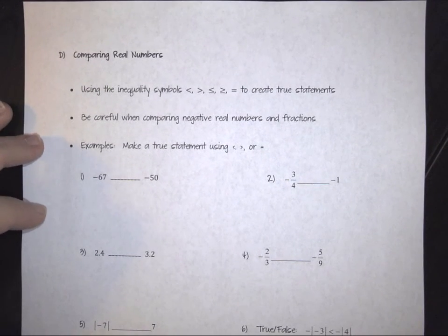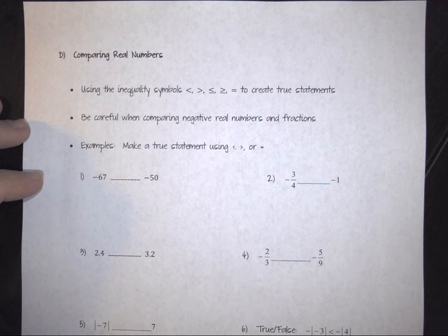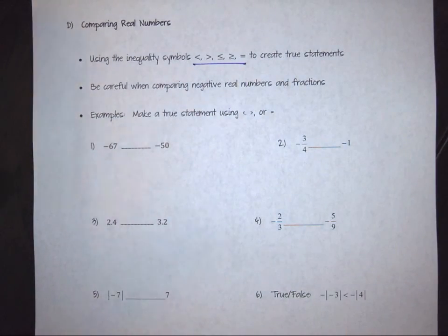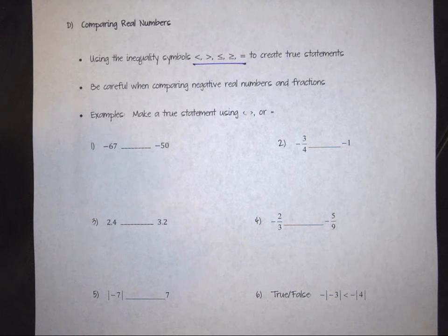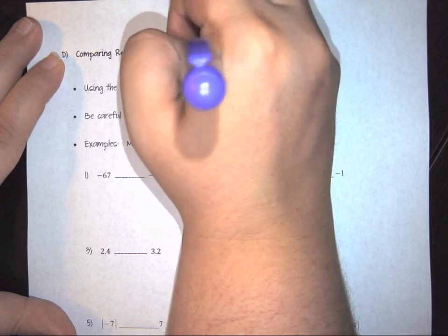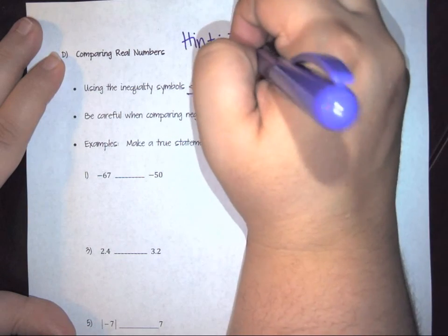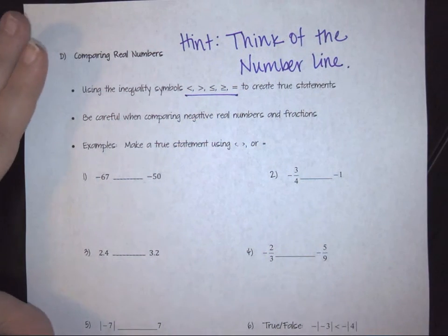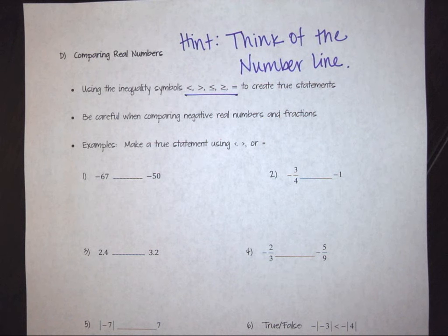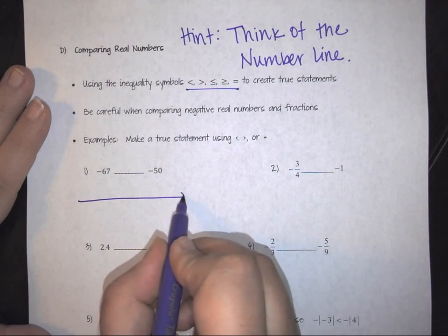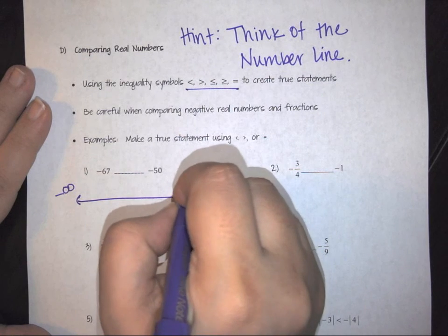The last topic on our introductory road is comparing numbers. Comparing numbers uses less than, greater than, less than or equal to, greater than or equal to, or equal to. The biggest hint I can provide is to think of the number line and where your numbers would actually fall on it. For example, comparing negative 67 and negative 50: draw the number line from negative infinity to positive infinity with zero in the middle.